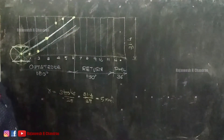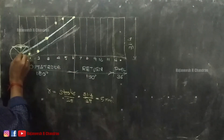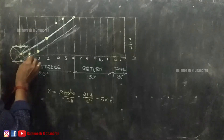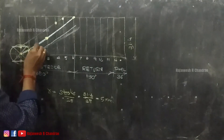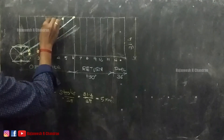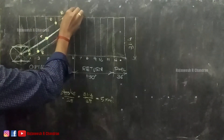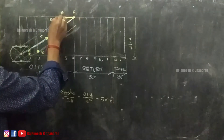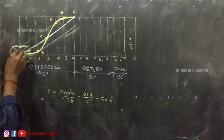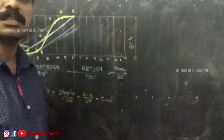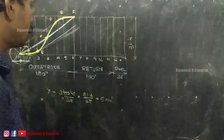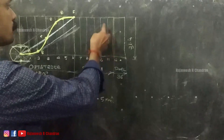The labeled points on the displacement diagram are: zero (starting), then A, B, C, D, E, and F. This is the initial portion of the cycloidal curve for the outstroke, and the same construction has to be done for the return stroke portion as well.